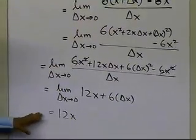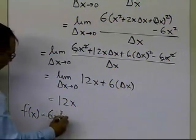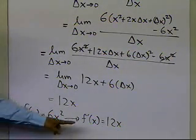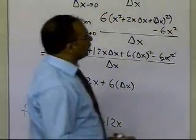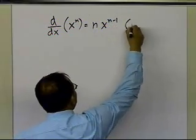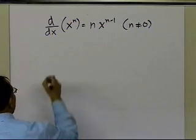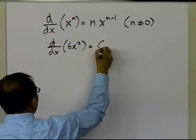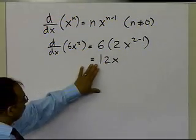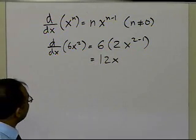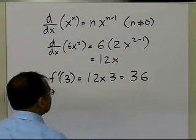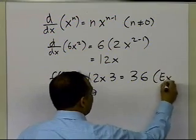So f prime of x for f(x) = 6x² is 12x. You could also derive this using the power rule from differential calculus: d/dx of x^n equals n times x^(n-1). Applying that to 6x² gives 12x as well — the same result. Therefore, f prime of 3 is 12 times 3, which equals 36. That is the exact value of the derivative at x = 3.